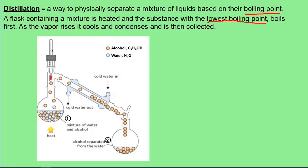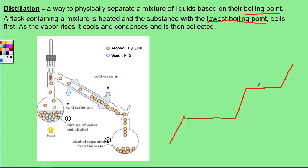Once the temperature starts to rise again, we know that all of the alcohol has left the container, so the temperature is increasing. When it hits the next constant temperature, we're at a new substance's boiling point. Remember, boiling point is always held constant as the substance undergoes boiling — it stays constant until it's completely done boiling away.